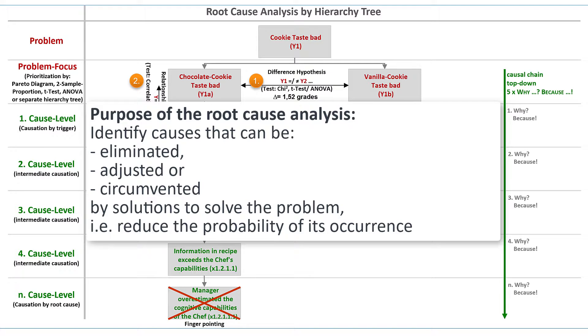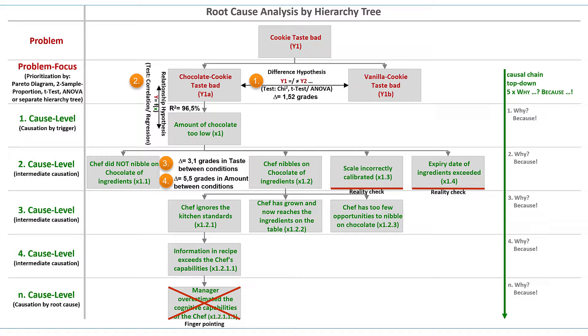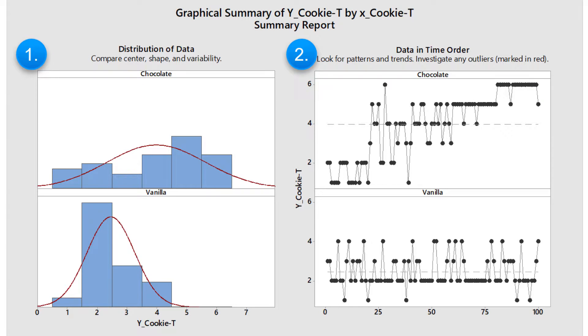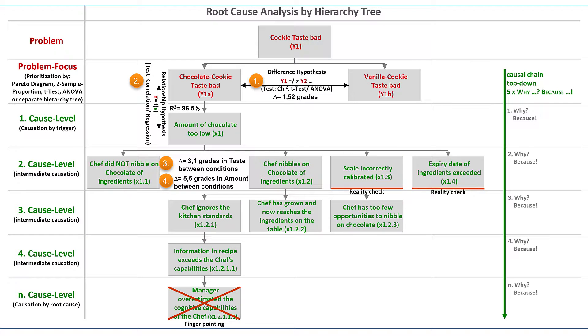To find causes that we can eliminate, adjust or circumvent with solutions. As next cause for the nibbling of the chocolate is assumed that the chef has grown and can now reach the ingredients on the table. This assumption is also plausible, because it explains the negative trend in the rating of cookies, as shown in the time series plot. The following question on the next level, why the chef has grown, is again pointless. Because body growth is an unchangeable fact of reality. We cannot and will not change that.